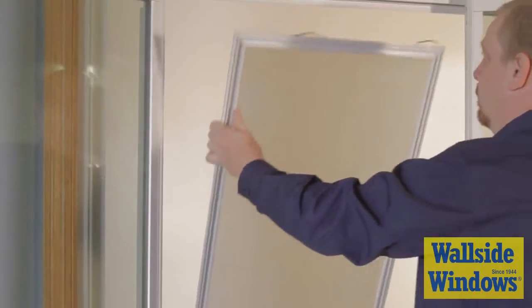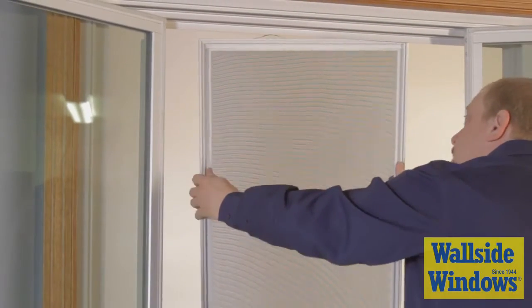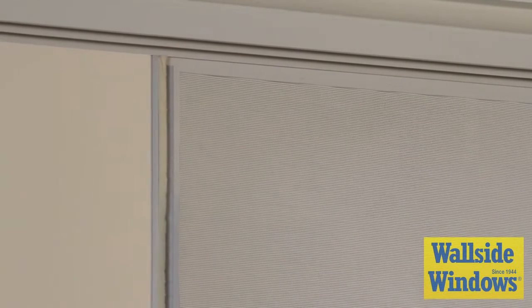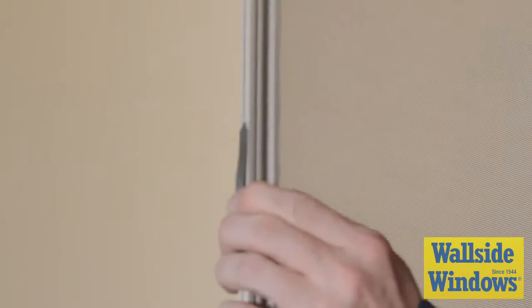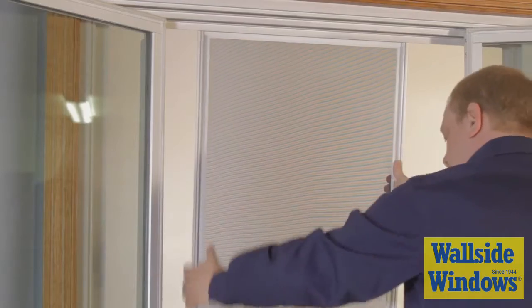To reinstall the screen, slide the compression springs into the screen track and lightly push to compress the springs. Now swing the screen into its original position, allowing the springs to expand and hold it in place.